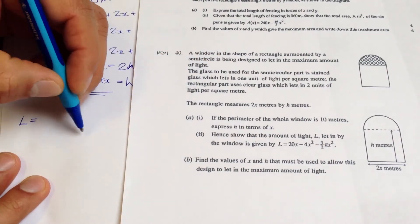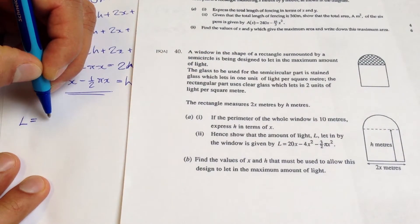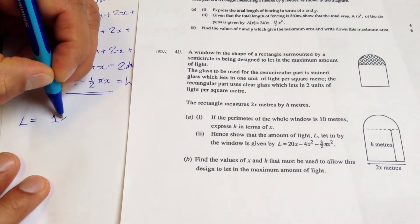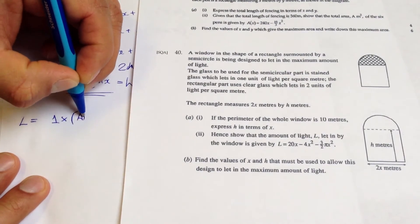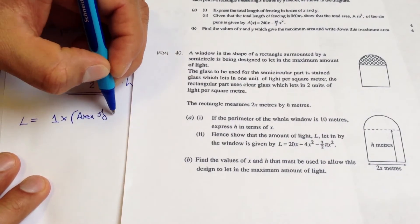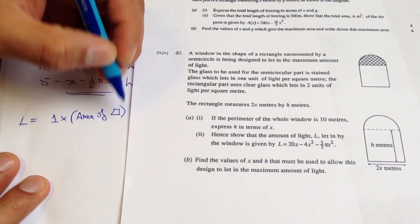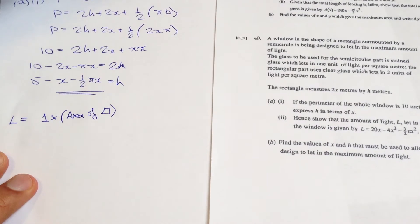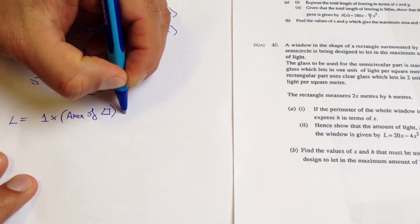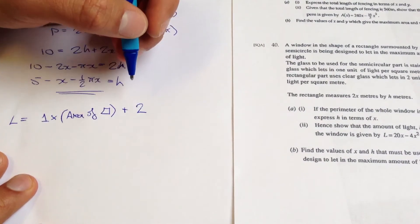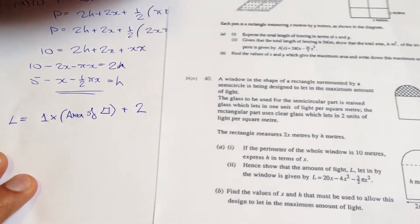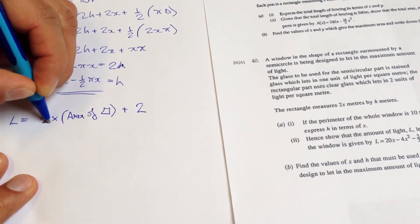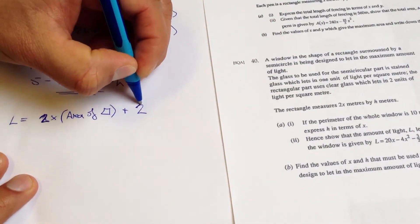So L will be the one unit times the area of the rectangle plus, I'll just need to slide that out of frame, sorry, plus two units because, ah, sorry, got it the wrong way around. This will be two units, and that will be one unit.